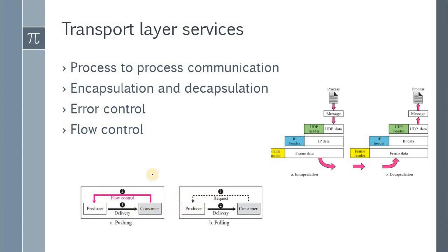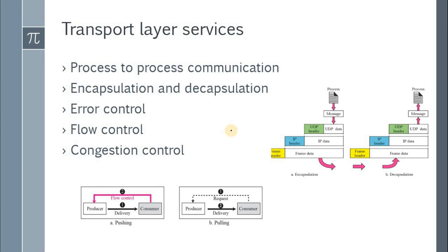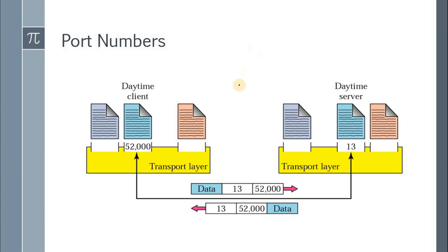The fifth service is congestion control. Congestion occurs when the number of packets increases beyond the capacity of the sender, the network, or the receiver. Both sender and receiver have buffers; if data exceeds buffer capacity, congestion occurs. Similarly, routers in the network have their own buffers, and if data exceeds router capacity, packets are discarded. The transport layer handles this congestion, and we will study how in detail in coming lectures.